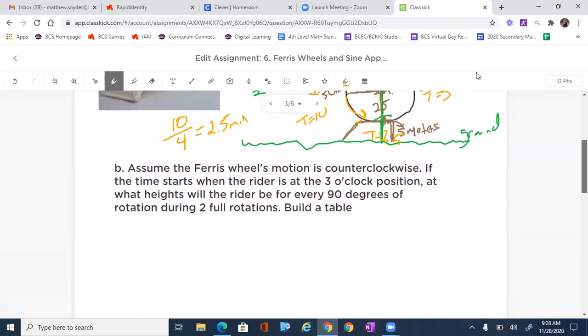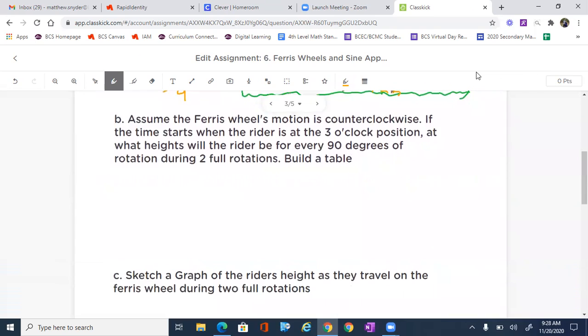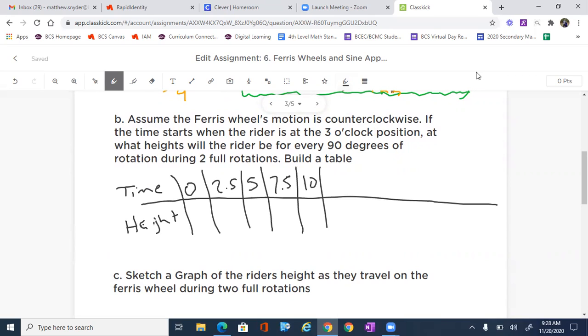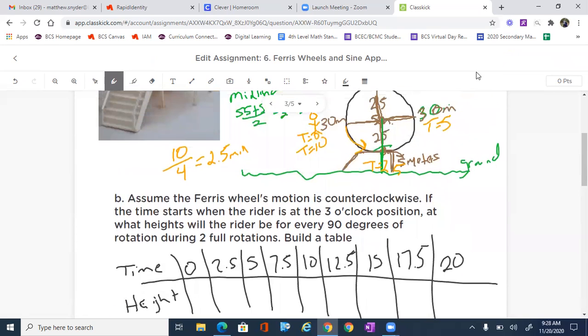So let's go ahead and make a table for two full rotations. Simple table. I'm just going to write, we've got the time and we've got the height because there are two factors here. And we're just going to go zero, 2.5, 5, 7.5, 10, 12.5, 15, 17.5, and 20. Now notice that what I'm doing here is I'm going by 2.5 because those are our quarters. And we start at time zero in the nine o'clock position.